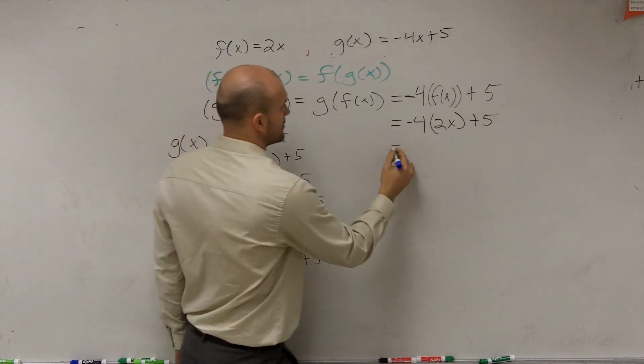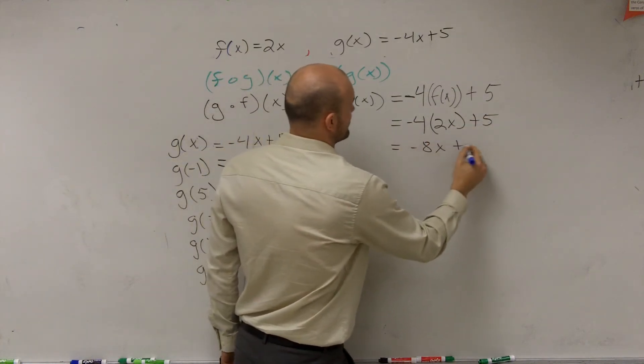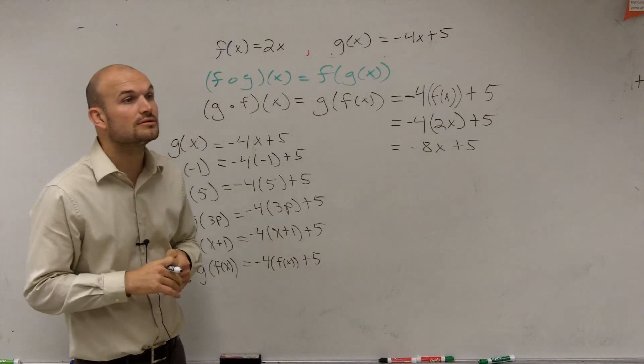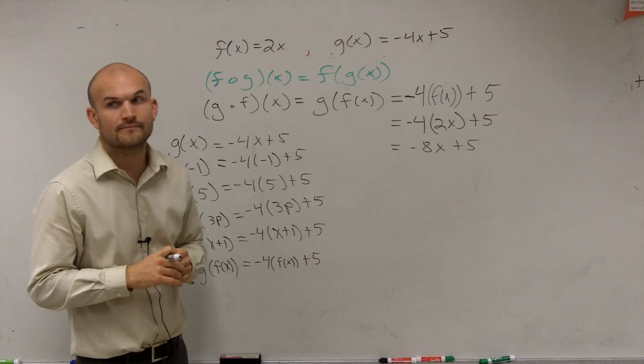Now, you can distribute negative 8x plus 5. And I cannot simplify that any further, so that is going to be your final solution. That's going to be your final expression. Okay?